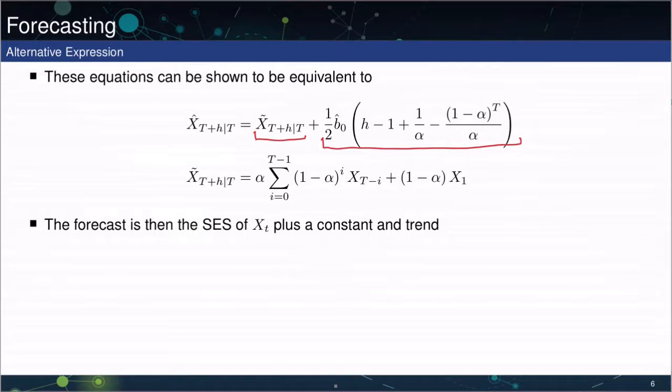And the second one is what, at the end of the day, we're going to see is going to be a damped trend. So you have this b0 term, b0 hat term. You then have h appears there, so the longer horizon you get, it's going to be larger. Instead of just being the trend times the horizon, there's going to be some additional terms here.